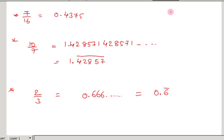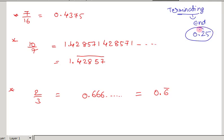Let us discuss the types of decimals — terminating and non-terminating. Every decimal number consists of two parts: the whole part (to the left of the decimal point) and the decimal part (to the right of the decimal point). A terminating decimal is a decimal number which has a finite number of decimal places — meaning after the decimal point, you are able to count the number of decimal places.